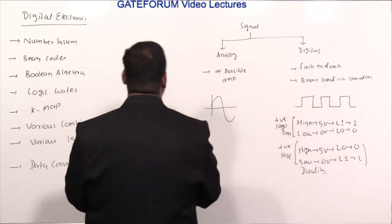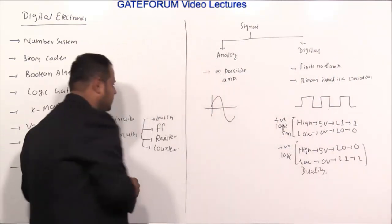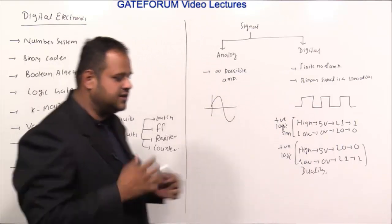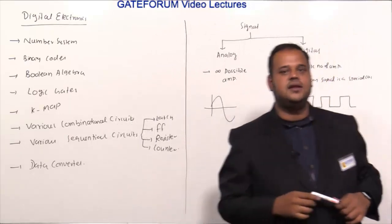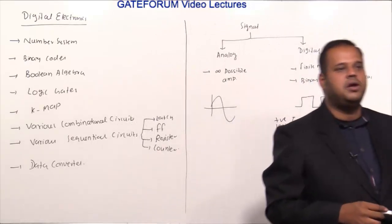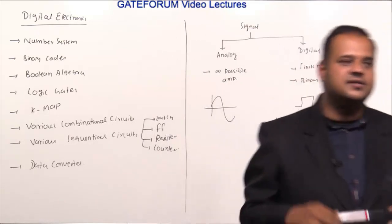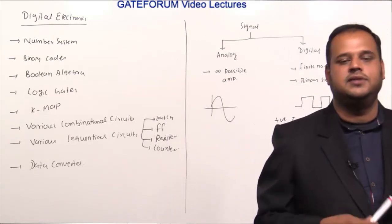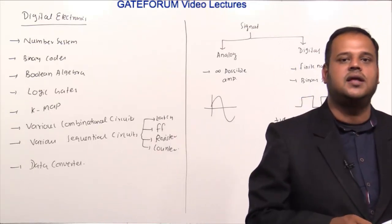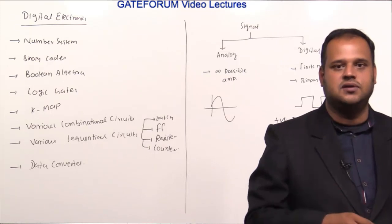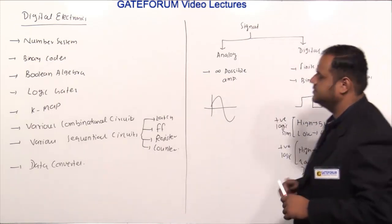So what is the term digital? A signal is something which carries some information. In a broader sense, signals are classified into two categories: analog signal and digital signal. The main feature distinguishing them is that in an analog signal there are infinite possible amplitudes. For example, if I draw a sinusoidal signal between 0 volts and 5 volts, there are infinite possible numbers between 0 and 5.